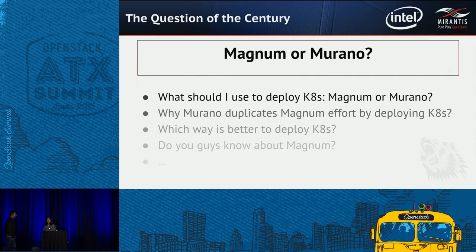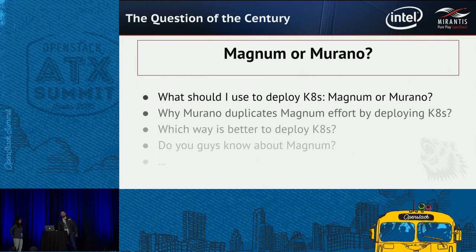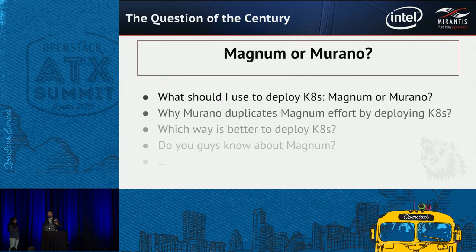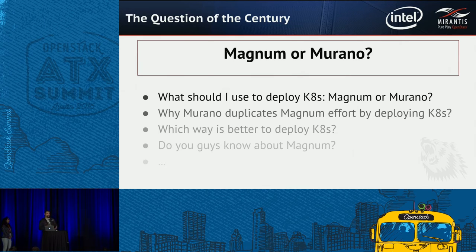Now I'm handing back to Serge to explain the question of the century. Starting from the Vancouver Summit, almost each day two to five people were asking me: what should I use, Magnum or Murano? Which way is better to deploy Kubernetes? Do you know about Magnum? And so on.